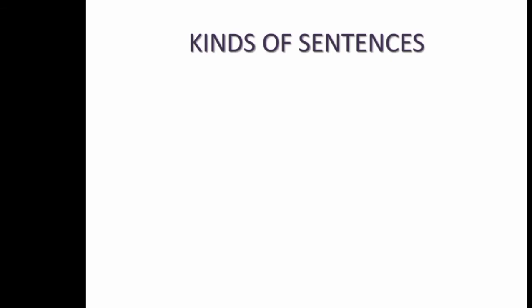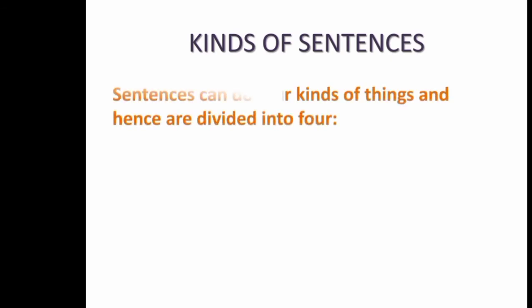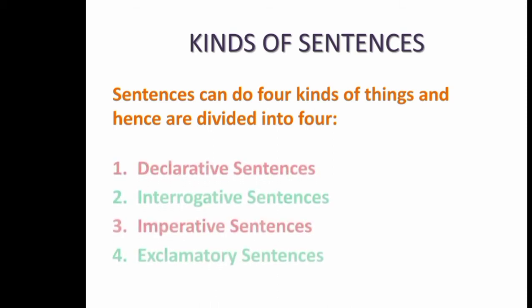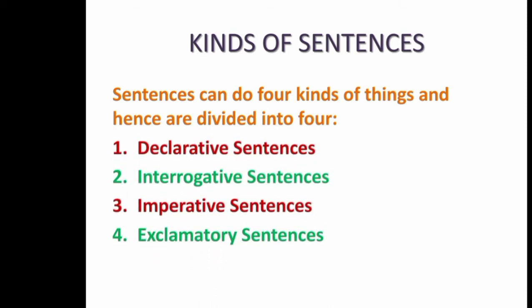Kinds of sentences. Sentences can do four kinds of things and hence they are divided into four kinds. They are: declarative sentences, interrogative sentences, imperative sentences, and exclamatory sentences.